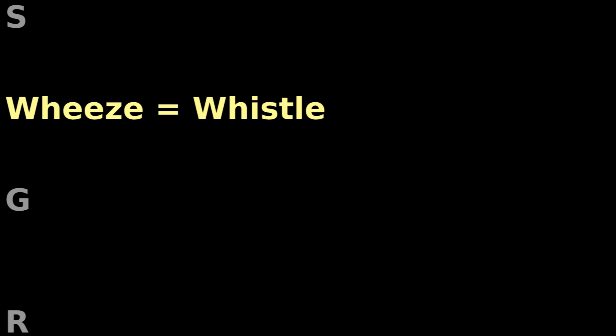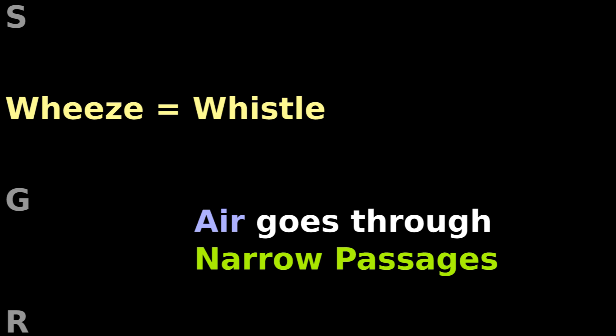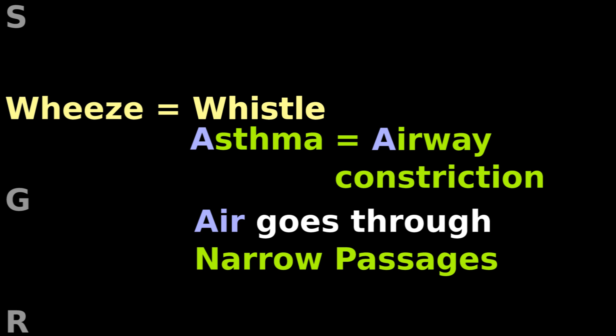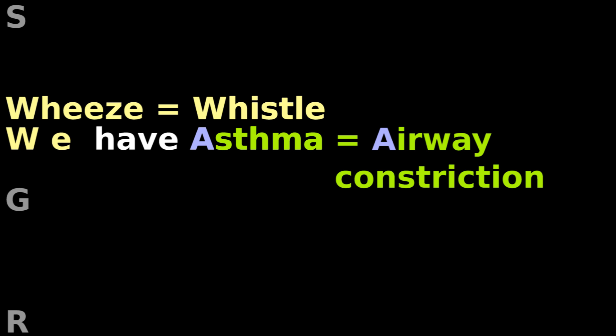Wheeze is a whistle. Air whistles when going through narrow passages, like blowing through puckered lips. You also have narrow passages when you have asthma.